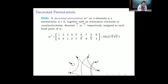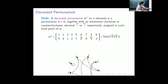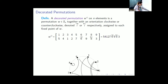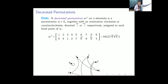What's a decorated permutation? It's very similar to a regular permutation in S_n, except that on every fixed point you must assign an orientation — either clockwise or counterclockwise. It makes sense to think about a decorated permutation in terms of an arc diagram. You put the numbers from 1 to n around a circle, and put an arc from i to w(i) for every i. At each fixed point you put a little circle clockwise or counterclockwise.